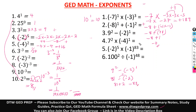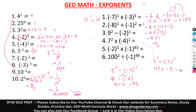Number 4: 7 squared times negative 4 raised to the power of 1. Seven squared is 49. Negative 4 raised to power 1 is still negative 4. So 49 times negative 4 gives us negative 196.